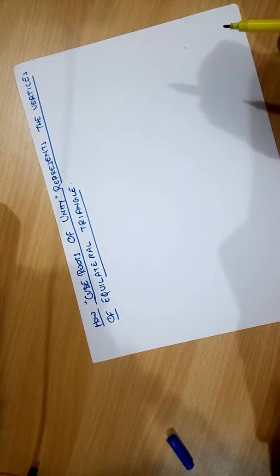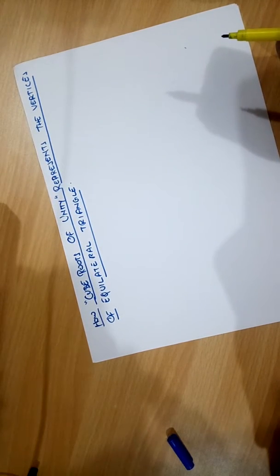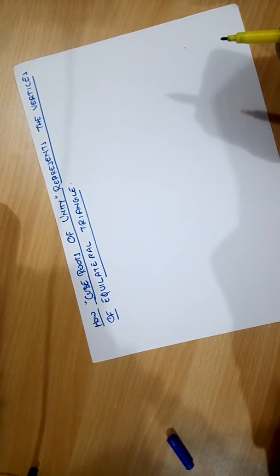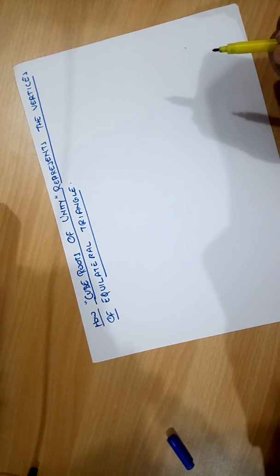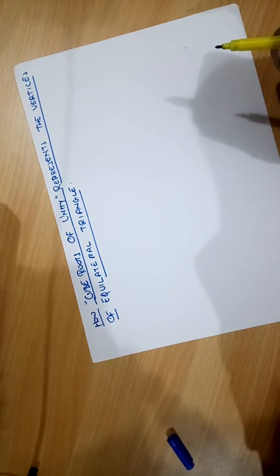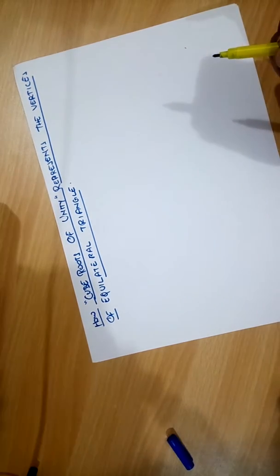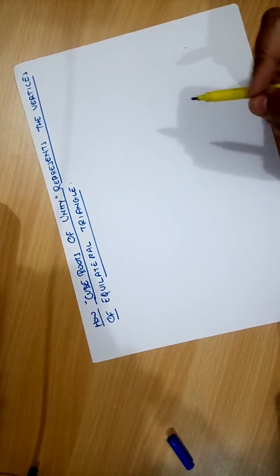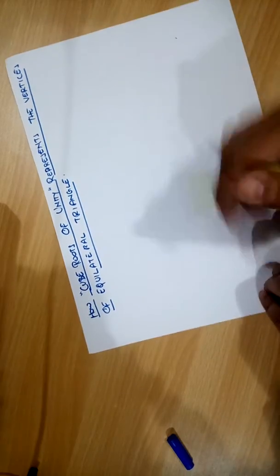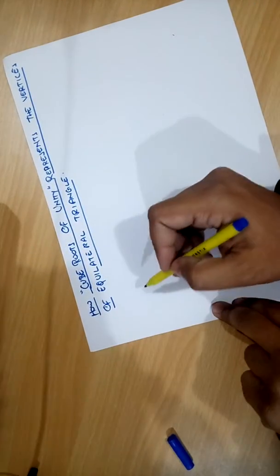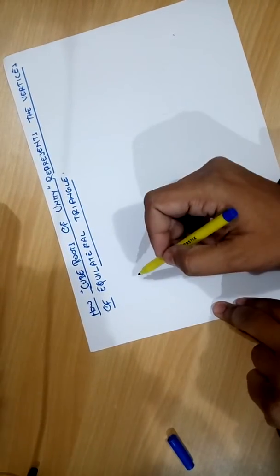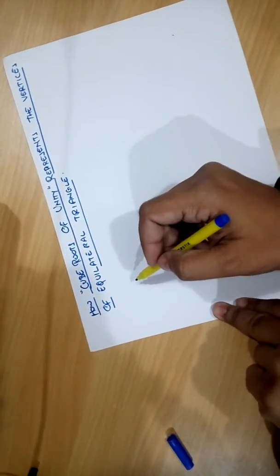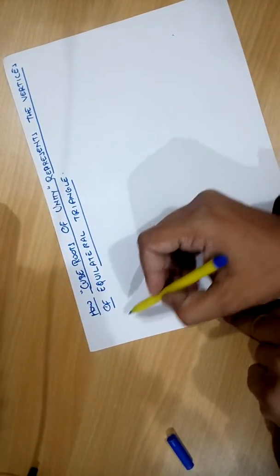Hello friends, today we are taking the question of how cube roots of unity represent the vertices of an equilateral triangle. So first of all, we will understand what is the cube root of unity.